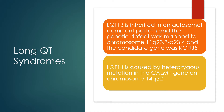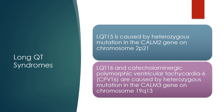LQT13 is inherited in an autosomal dominant pattern; the genetic defect was mapped to chromosome 11 and the candidate gene is KCNJ5. LQT14 is caused by a heterozygous mutation in the CALM2 gene on chromosome 2. LQT16 and catecholaminergic polymorphic ventricular tachycardia type 6 are caused by a heterozygous mutation in the CALM3 gene on chromosome 19.